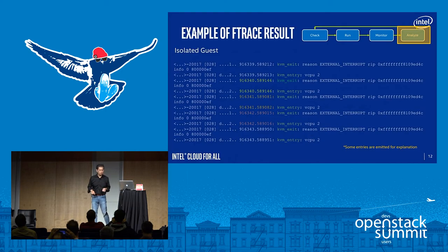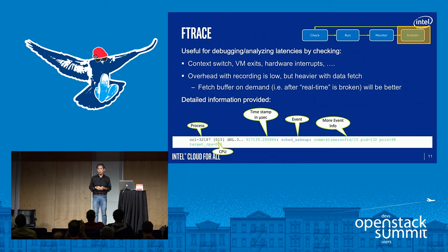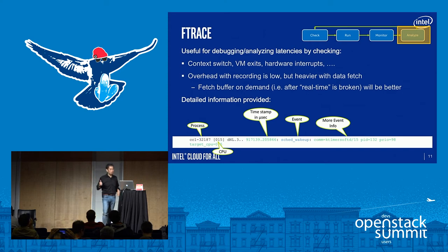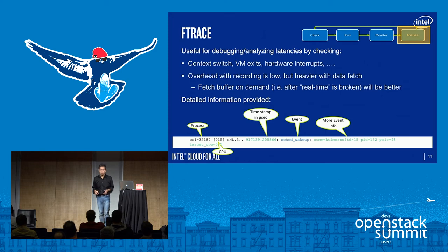Another tool is ftrace. This is also good to get more detailed data for debugging and analyzing latency. You can get context switch information, VM exits, or hardware interrupts. Overhead depends on what kind of event you're going to measure. This is a typical output from ftrace — you can see the process and the CPU number, a timestamp in microseconds, and the event with more information like PID. This provides very detailed information because it has a microsecond timestamp and also CPU information.